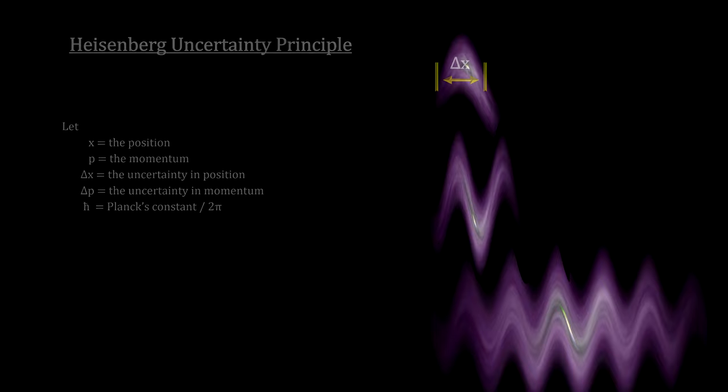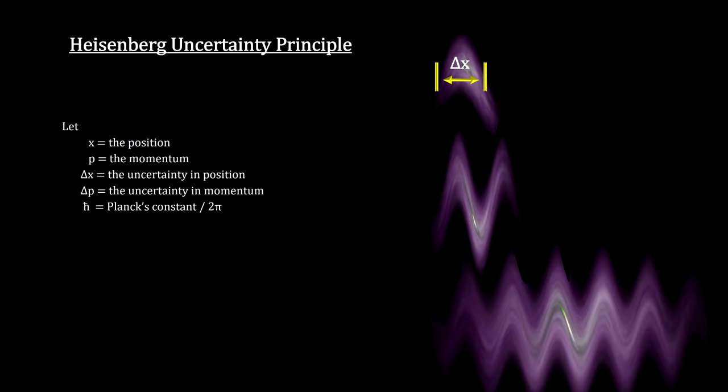Here we see three different wave packets for an electron. The wave packet at the top is narrow and therefore easier to locate, but it is less than one wavelength so its momentum is impossible to figure out.